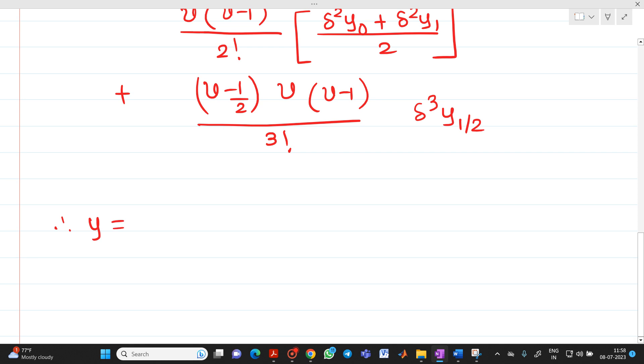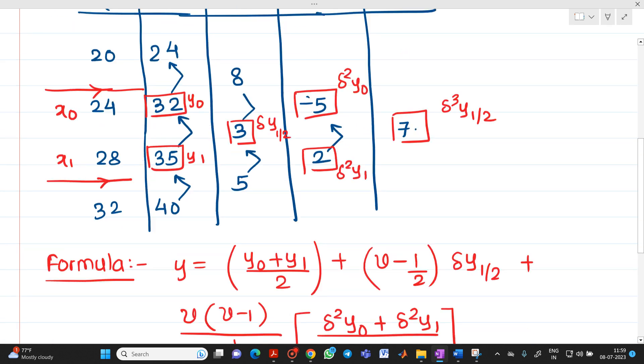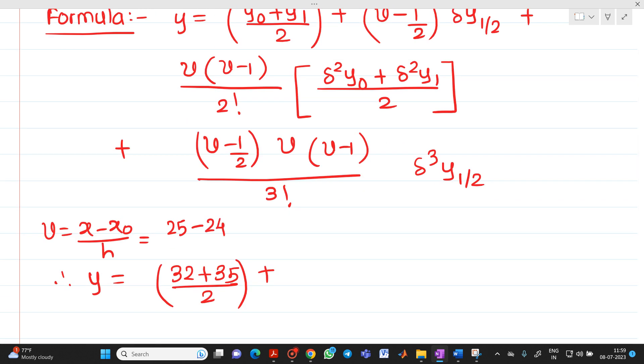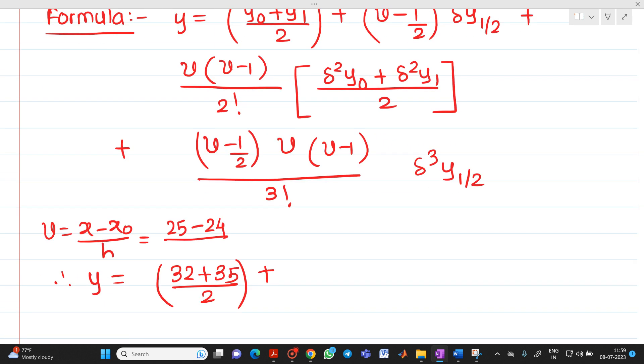So let me substitute it. Here it will be (32 + 35)/2. Plus, now the thing is, how to find out first v. v will be equal to (x - x₀)/h. What is x? Here we have to find out the value for y(25). So it will be 25. Minus, what is x₀? It is 24. So let me write it as 24. And h will be equal to x₁ - x₀, so it will be 4. So if you see, you will get this answer as 0.25. v will be 0.25.